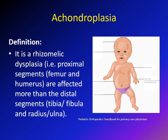Achondroplasia is a rhizomelic dysplasia, meaning it mainly affects the proximal segment of the extremity. So the upper extremity and lower extremity are short. However, the proximal segment is more affected than the distal segment — the upper arm is more affected than the forearm, and the thigh is more affected than the lower leg. This is the definition of rhizomelic dysplasia.